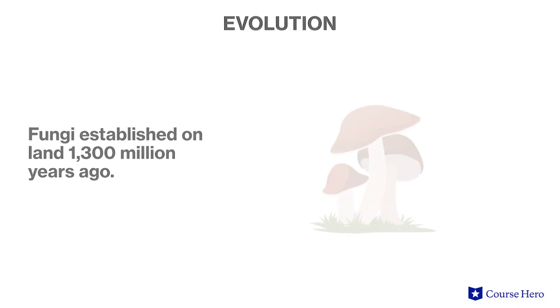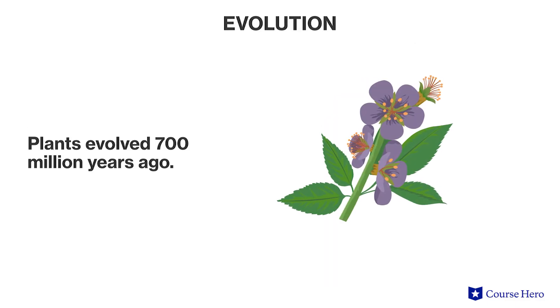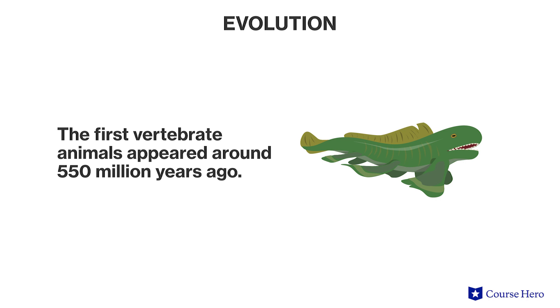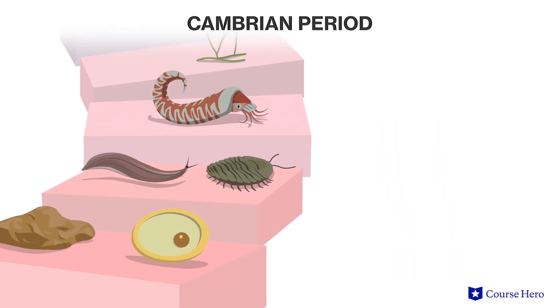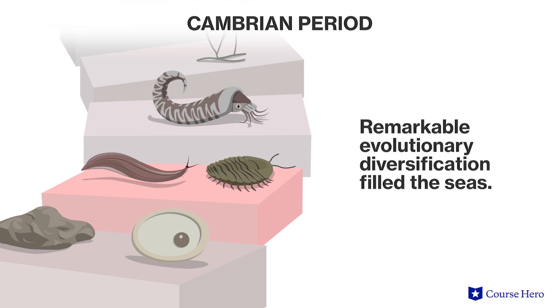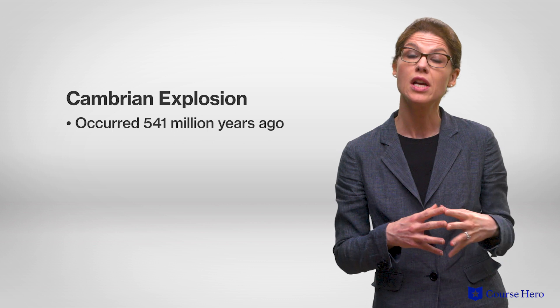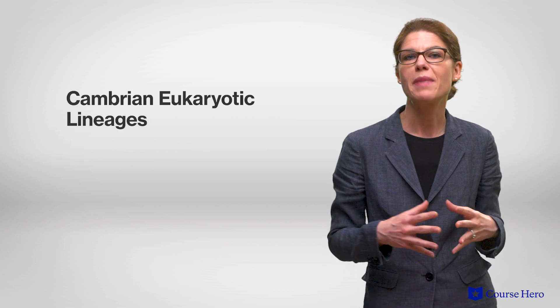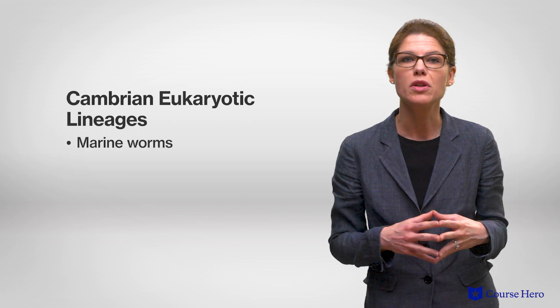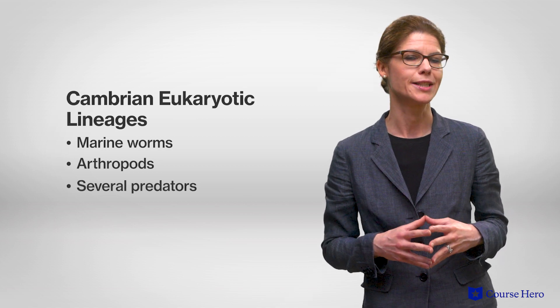By 1,300 million years ago, fungi had become established on land, and land plants evolved by about 700 million years ago. The first invertebrate animals evolved around 700 million years ago, and the first vertebrate animals appeared around 550 million years ago. By the Cambrian period, there was a remarkable event of evolutionary diversification that filled the seas. The Cambrian explosion, which occurred 541 million years ago, was a biologic event when many lineages of organisms first appeared, bringing about the evolution of eukaryotic lineages such as marine worms, arthropods, and several predators. Scientists estimate that species biodiversity during the Cambrian explosion may have reached the level of biodiversity seen today, though most of those species are now extinct.